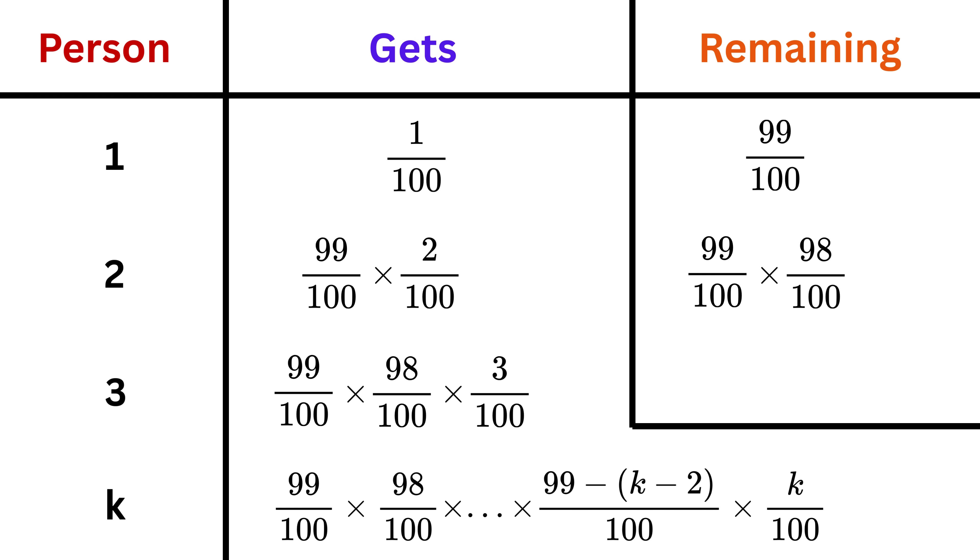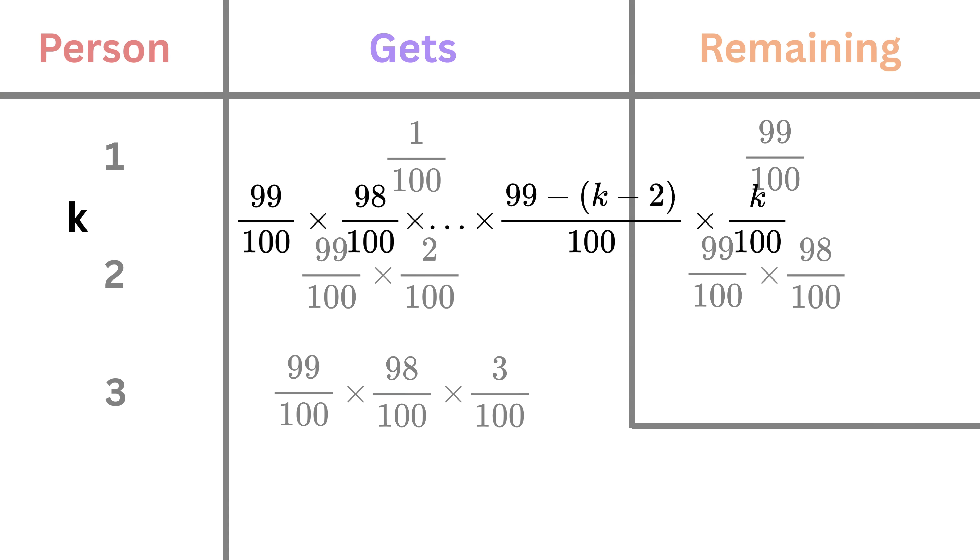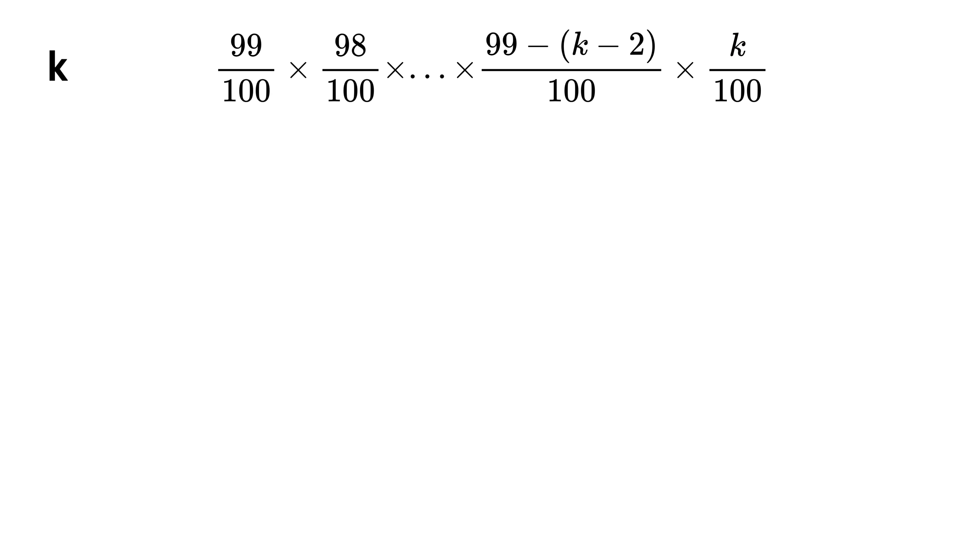This forms a general formula. Let us simplify this formula. How many terms are there here? This is 99 minus 0, then this is 99 minus 1, and so on till 99 minus k minus 2, which means we have k minus 1 terms here, and this one more term makes it k terms. So this means we have 100 multiplied k times, and thus the denominator becomes 100 raised to the power k.